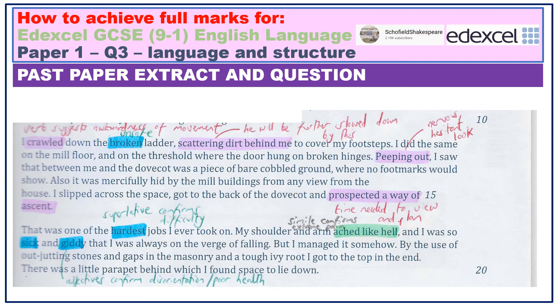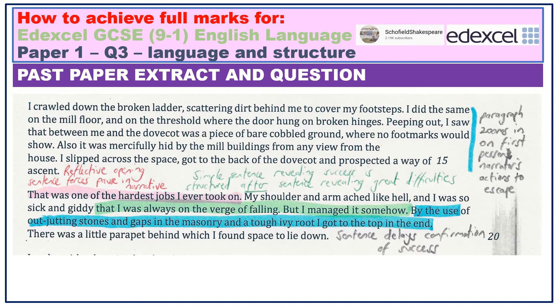But we also need to explore structure. Notice the shift in narrative focus. The first paragraph is all zoomed into the man's minute actions as he tries to escape. But then the second paragraph begins with the narrator taking a step back to reflect on just how difficult the whole situation was — we go from a past tense narrative to the narrator looking back on what he did. Other structural devices include the simple sentence 'but I managed it somehow,' in which exactly what 'it' is is not confirmed until the end of the next sentence. Notice also the way the sentence 'by the use of out-jutting stones' is structured — a complex sentence in which the main clause, containing confirmation of the man's successful escape, is positioned right at the end. The reader is made to wait for this revelation, made to wade through the detail of the initial subordinate clause, and this helps build up excitement.